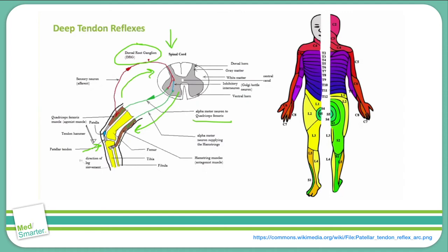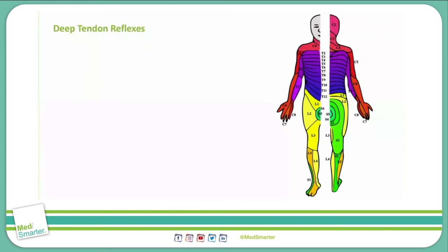This is also why the reflex feels so involuntary to the patient — the reflex arc is complete before any sensory or proprioceptive signals have a chance to reach the brain. That's how reflexes work at a high level, and it should be enough to answer a lot of what's asked on Step 1, along with knowing which reflexes correspond to which spinal nerves.